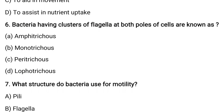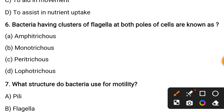Bacteria having clusters of flagella at both poles of cells are known as? Options are: Amphitrichous, Monotrichous, Peritrichous, or Lophotrichous. The correct answer is Amphitrichous — when flagella are present at both poles, that is called Amphitrichous. 'Amphi' means both.